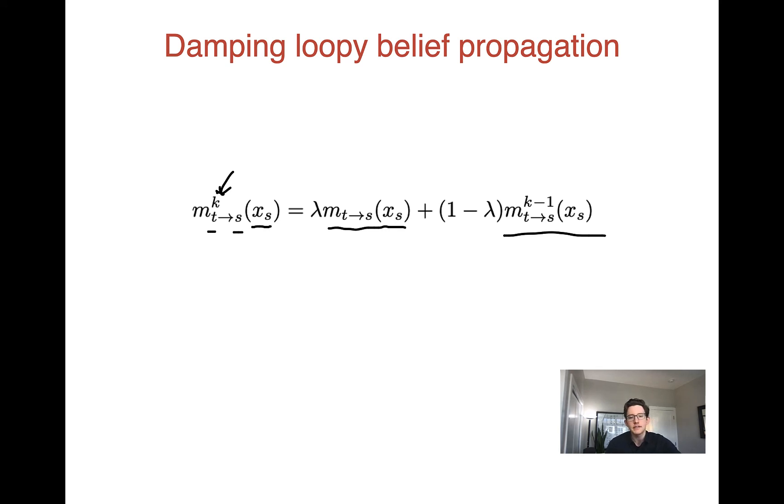So basically what this damping does is it says we're going to change our messages slowly. So that's going to greatly increase the chance that we converge. Because often when we don't converge, it's because there's some kind of bouncing behavior where when we do one iteration, it causes the messages to change in one way and then the next iteration causes them to change right back. Damping using this method will slow the changes down and hopefully cause it to converge.